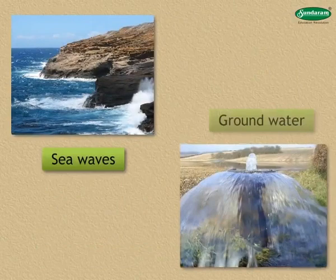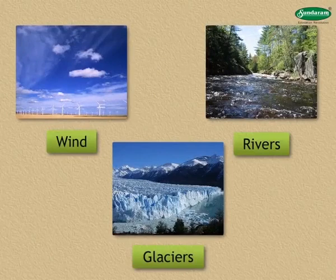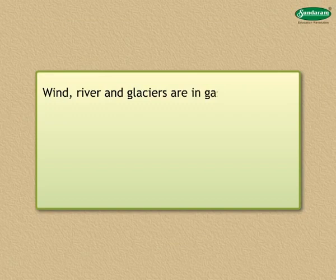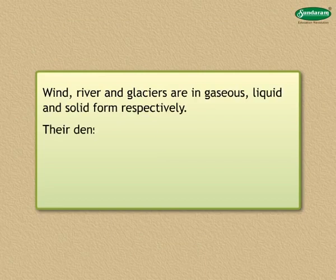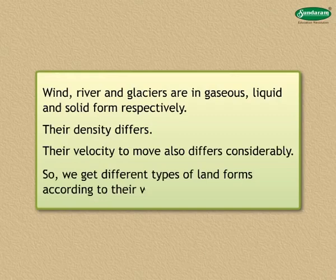The ability of wind, river and glaciers to bring about erosion is different because wind, river and glaciers are in gaseous, liquid and solid form respectively. Their density differs and their velocity to move also differs considerably. So we get different types of landforms according to their work.